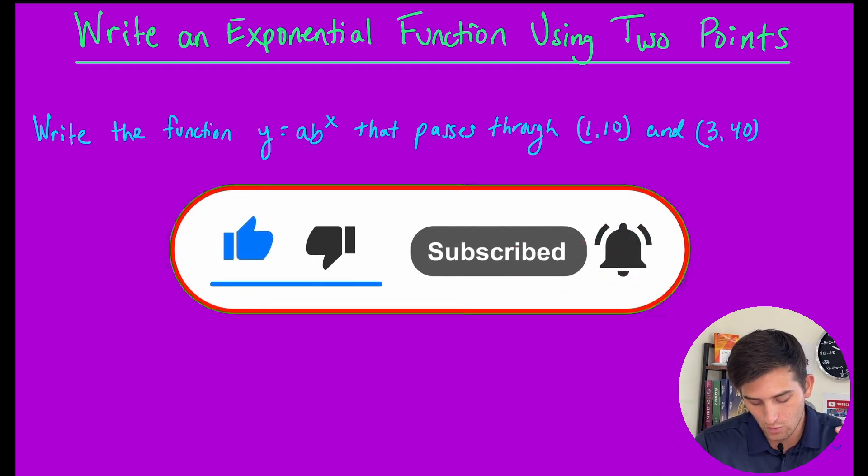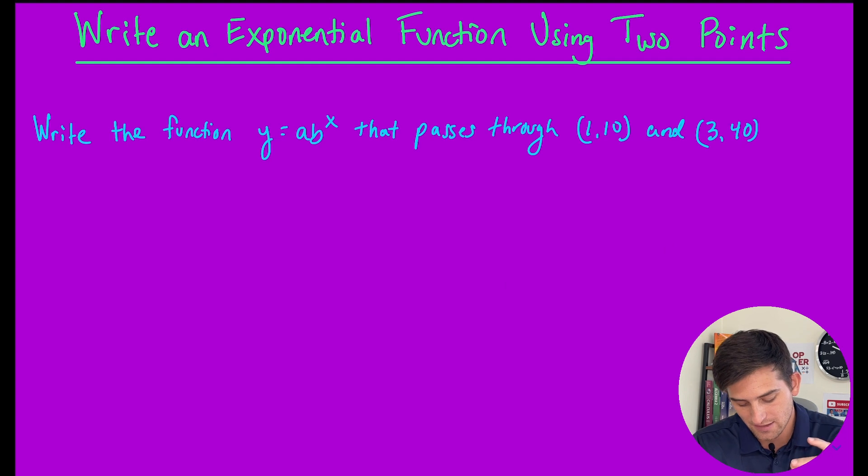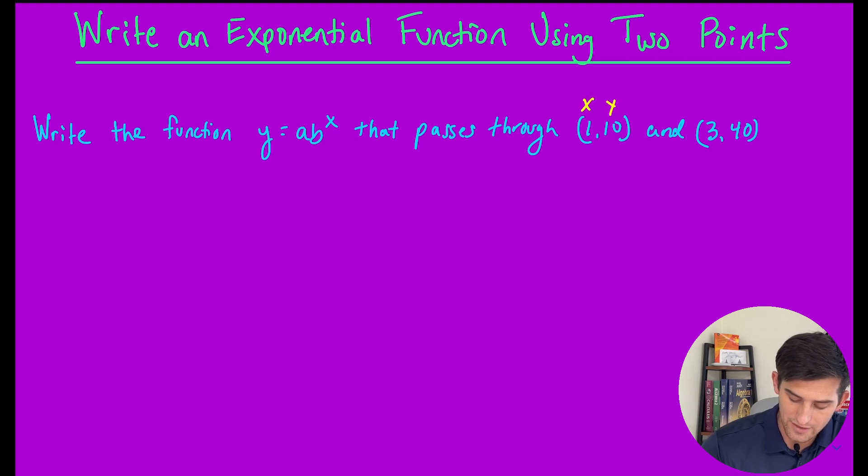Write the function in the form y equals a times b to the x that passes through (1, 10) and (3, 40). What are these points? Those are x and y values.